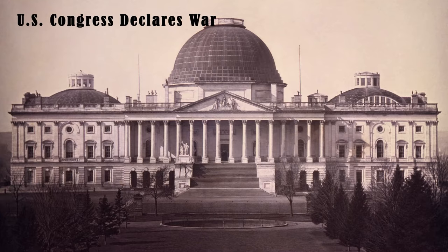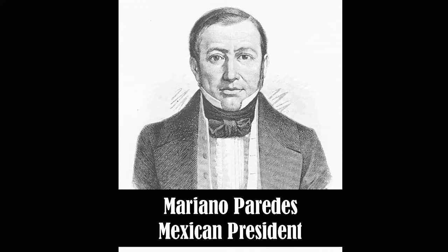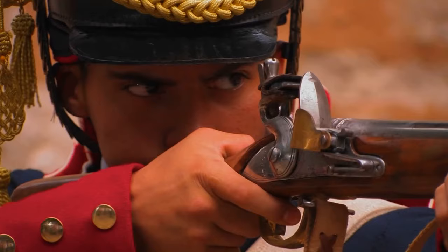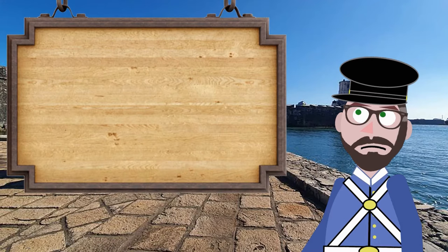On May 13, 1846, U.S. Congress officially declared war on Mexico. Mexican President Mariano Paredes decreed that Mexico will defend itself against American aggression. Mexicans were committed to defending their country, but lacked money and training.